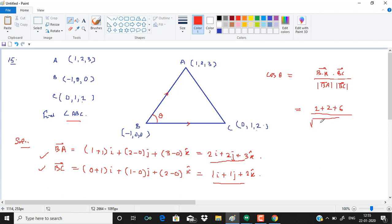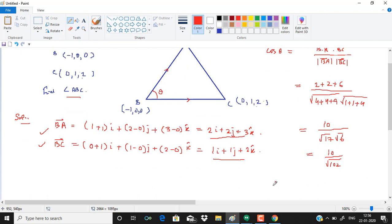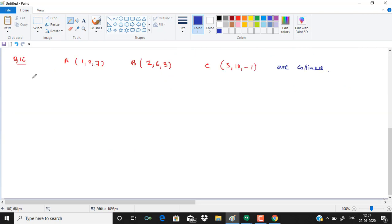Magnitude of BA vector is under root of 4 plus 4 plus 9, which is root 17. Magnitude of BC is under root of 1 plus 1 plus 4, which is root 6. Dot product is 10. So theta is cos inverse of 10 upon under root of 102.